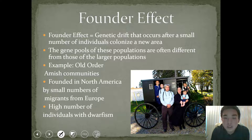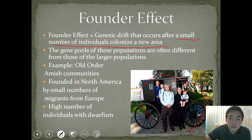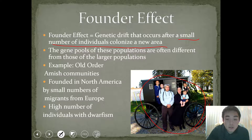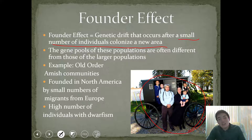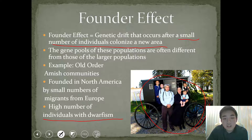The next effect is called the founder effect. This is a type of genetic drift that occurs after a small number of individuals colonize a new area. This original group — these founders — once again do not represent the original population and are often very different. One example is the Old Order Amish community. They came over from Europe and settled on the east coast of North America, around Pennsylvania. Those were selected, non-random individuals. They actually saw a high number of individuals with dwarfism, which may not have been an accurate representative of the entire population that was in Europe. So that's an example of a founder effect.